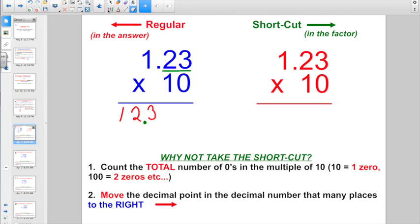But let's check this out in the shortcut version. In the shortcut version, I'm just going to count how many zeros I have. Move my decimal point over one place to the right. And I ended up with exactly the same answer. But again, it only works when multiplying by a multiple of 10.